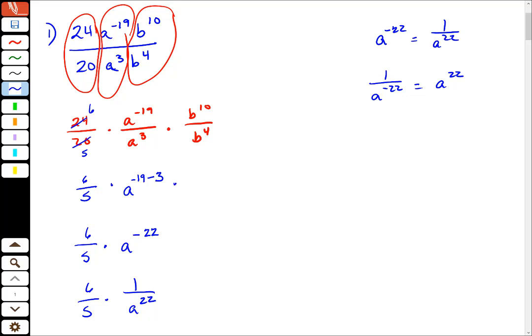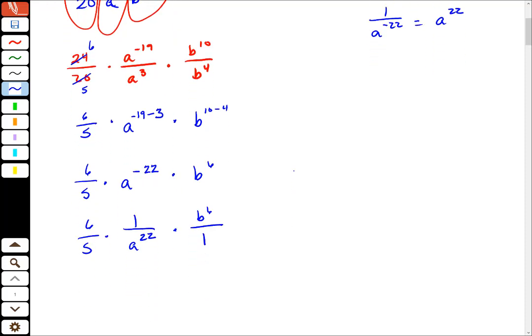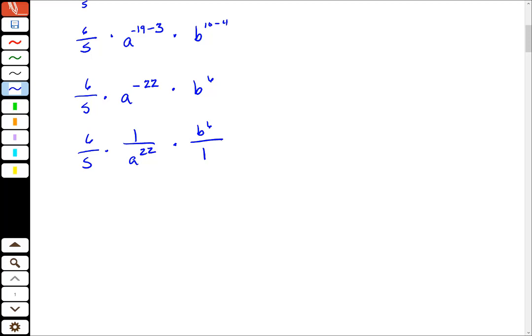Okay, so now I still have to do this b piece. This is still subtraction. b to the 10th minus 4 is b to the 6th and I still have b to the 6th, which in fraction form I think of as b to the 6th over 1. And so then I just multiply across. This is 6 times 1, that's just 6. b to the 6th over 5a to the 22nd power.